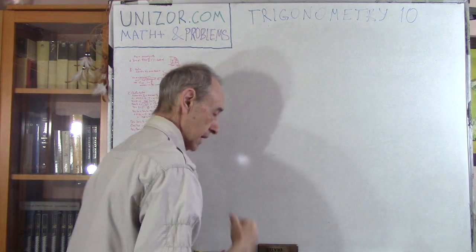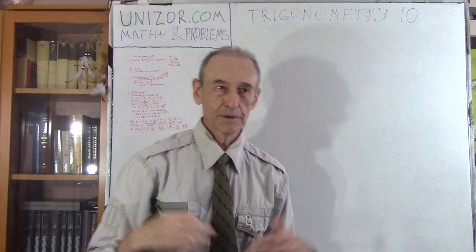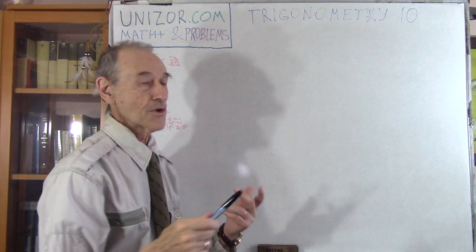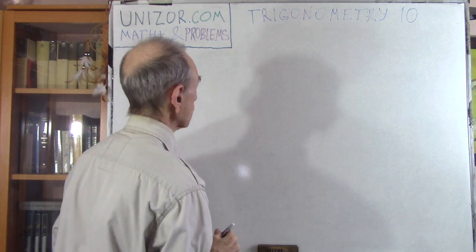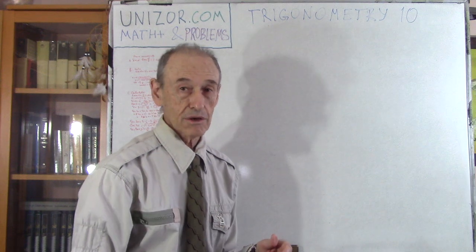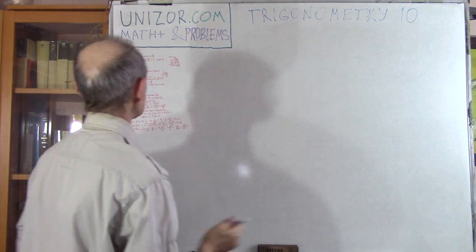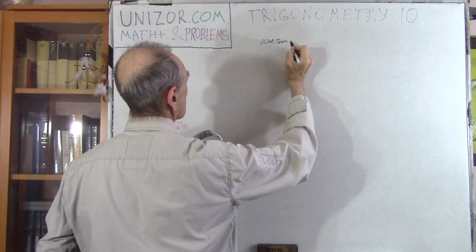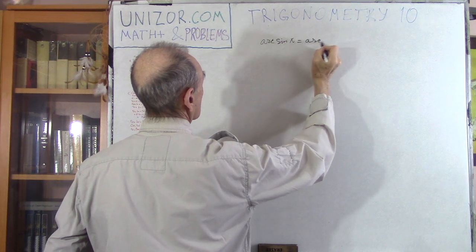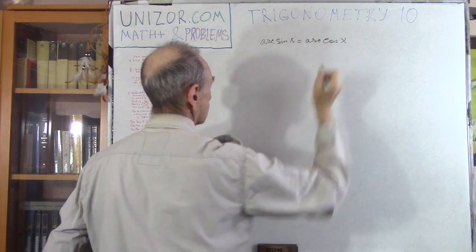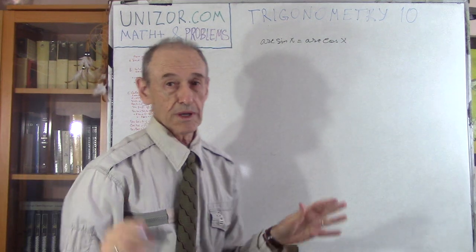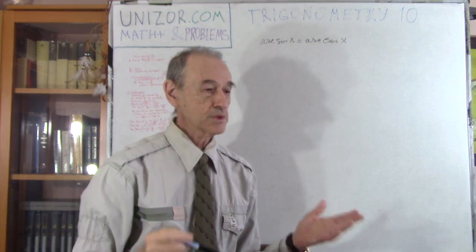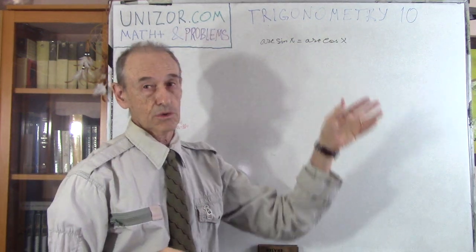The second problem is about inverse trigonometric functions — arcsine, arccosine, arctangent, etc. What I would like to do is solve the equation: arcsine of x equals arccosine of x. It's very simple; however, it requires you to recall certain things. First of all, what's the definition of arcsine and arccosine?